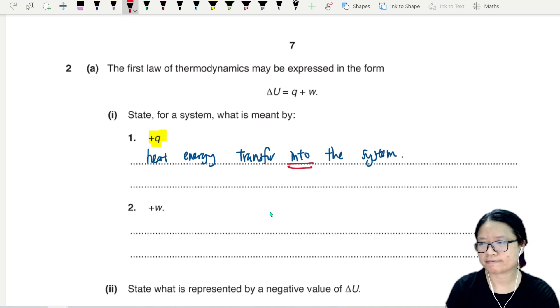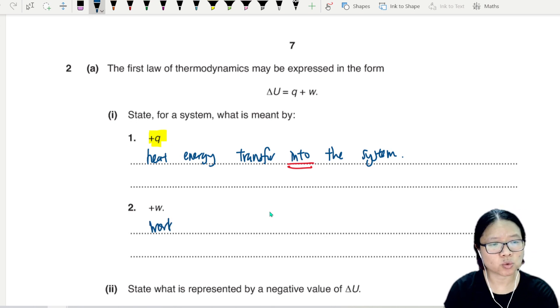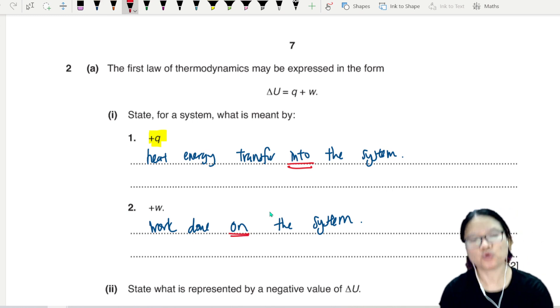Into is important. And positive w here means work done on the system. This is external work. When you do work on the system, you are adding energy to it.